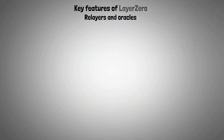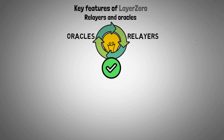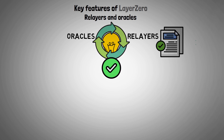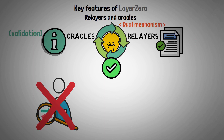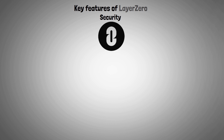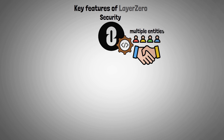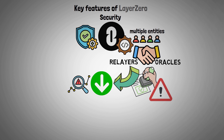Layer 0 uses a special mix of oracles and relayers to verify cross-chain messages. Transaction proofs are sent by relayers, and oracles supply the information needed for validation. By preventing a single party from controlling the transaction process, this dual mechanism improves security and trust. Because Layer 0's architecture distributes trust among multiple entities, it significantly improves security. The validation of a transaction requires the consent of both relayers and oracles, reducing the chance of fraud or attacks since it would take cooperation between these parties to compromise the system.